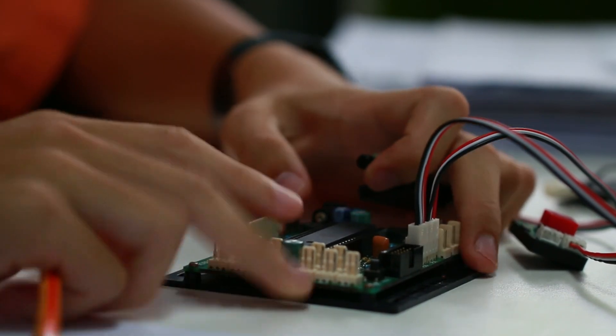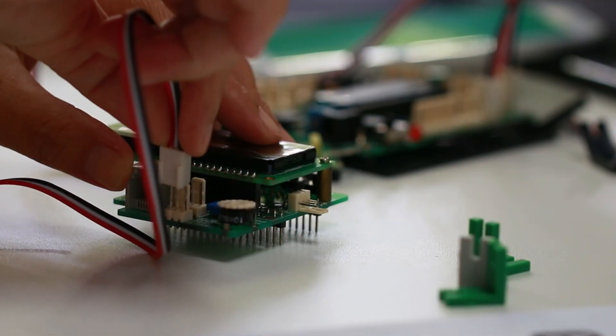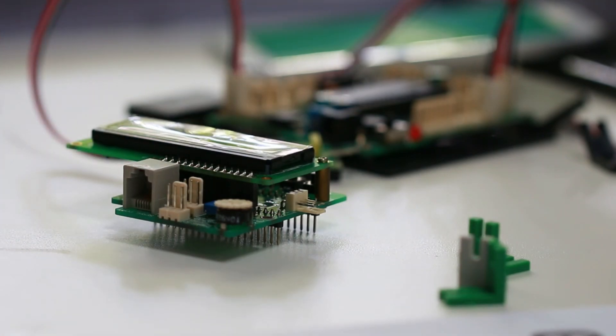By placing the fuse near the power input, it ensures that any fault in the circuit will cause the fuse to blow before the fault can cause damage to other components.